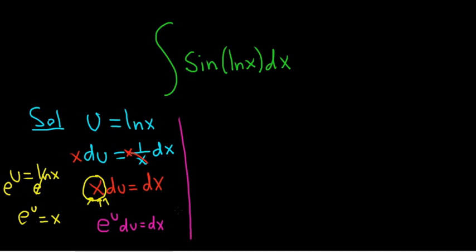Good stuff. All right, so now we can make our substitution. So here is our dx. That's going to be e to the u. And then here we have our du. And then we have sine ln x. That's simply sine u. All right, now we just have to integrate this.